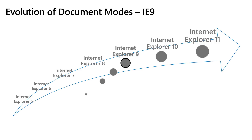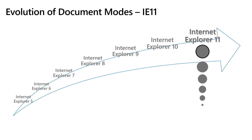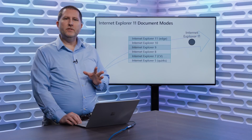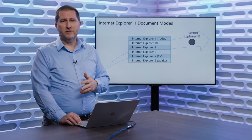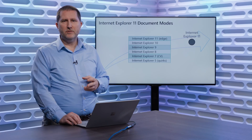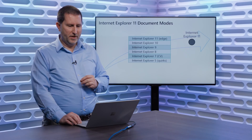In IE9, we carried forward all of these doc modes — IE8, 7, and 5. In IE10, we carried forward IE9, 8, 7, and 5. And in IE11, we carried forward all of these doc modes, including IE10. So in IE11 when it first shipped, we included document modes for IE11, 10, 9, 8, 7, and 5. This gave a lot of power and a lot of backward compatibility, but with power comes some risk. Having all of those document modes essentially means you have a much bigger attack surface than you would if you were running a modern browser without older document modes or without backward compatibility.